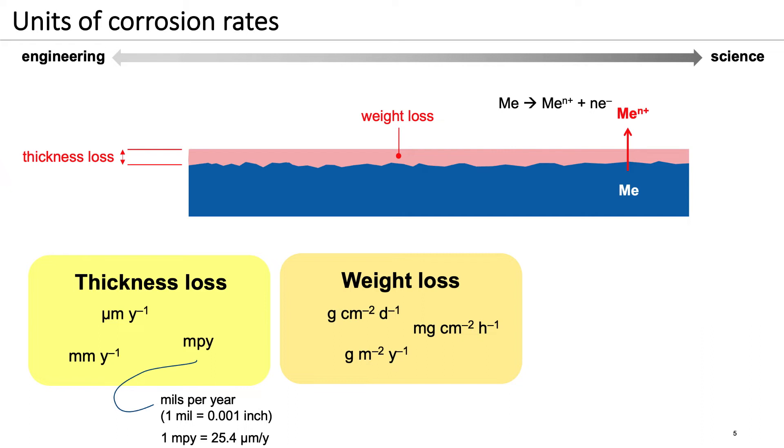Therefore, it is in the scientific context common to express corrosion rates with units such as ampere per meter squared, or any similar form of electrical current per surface area.